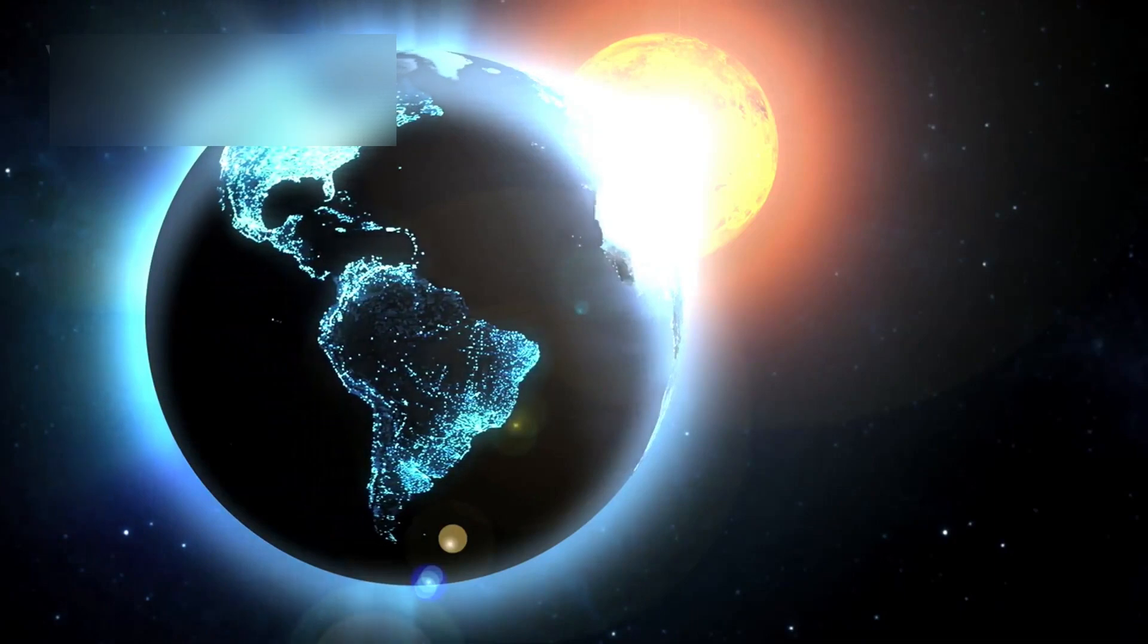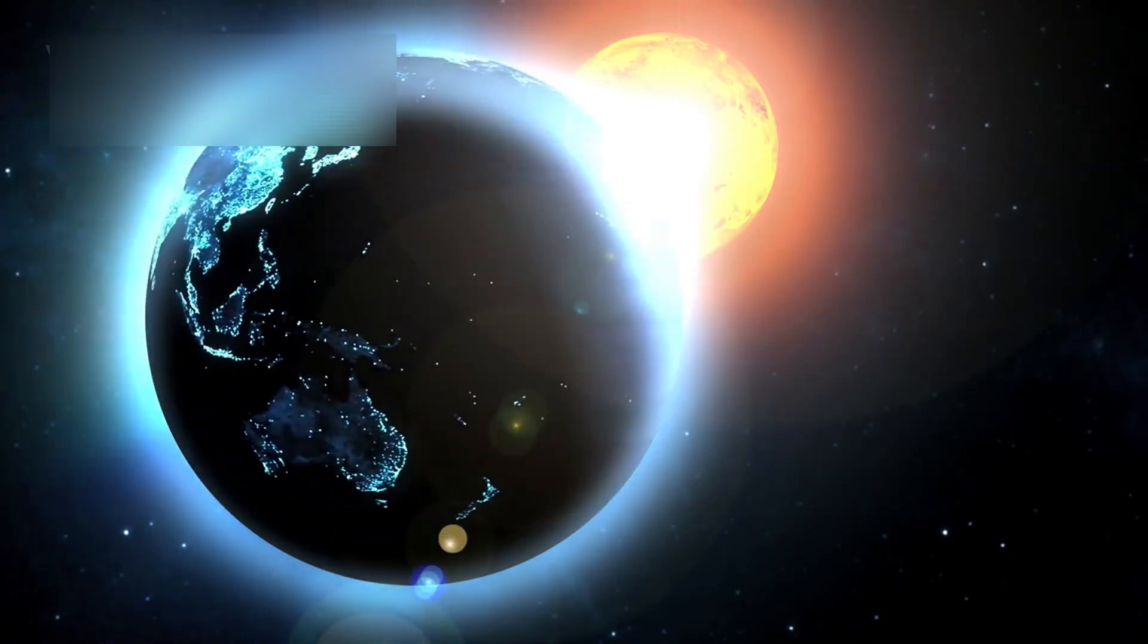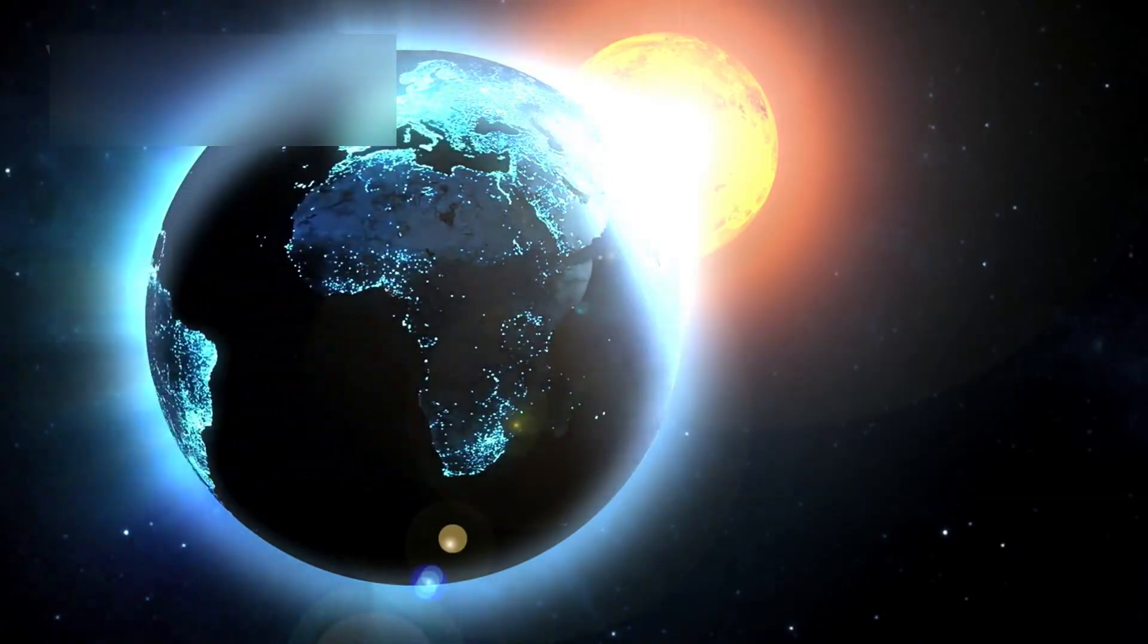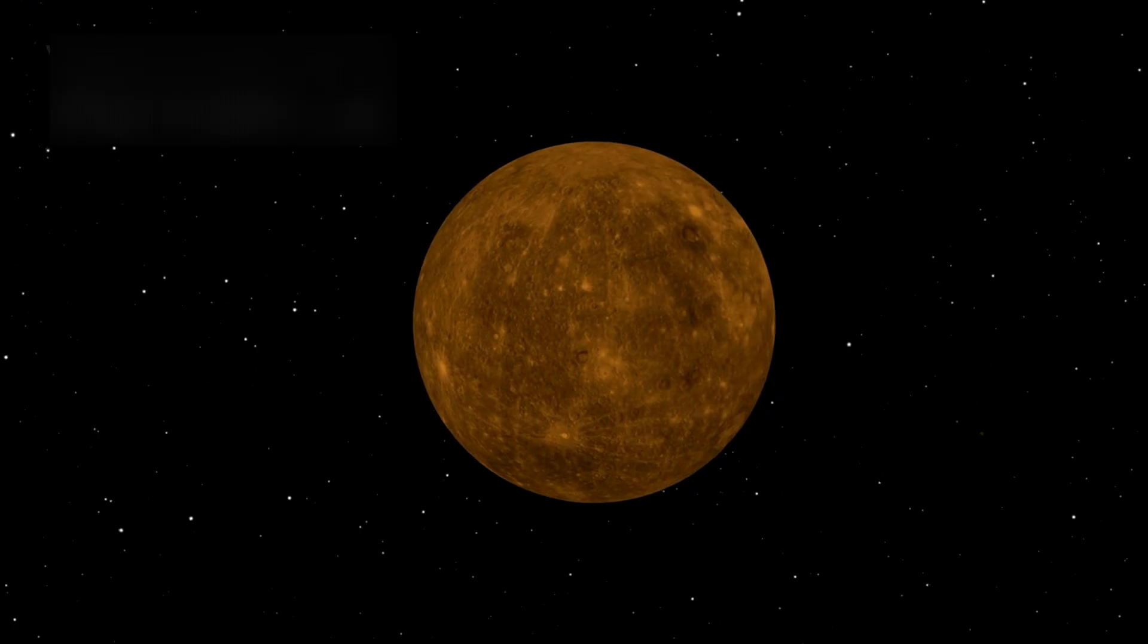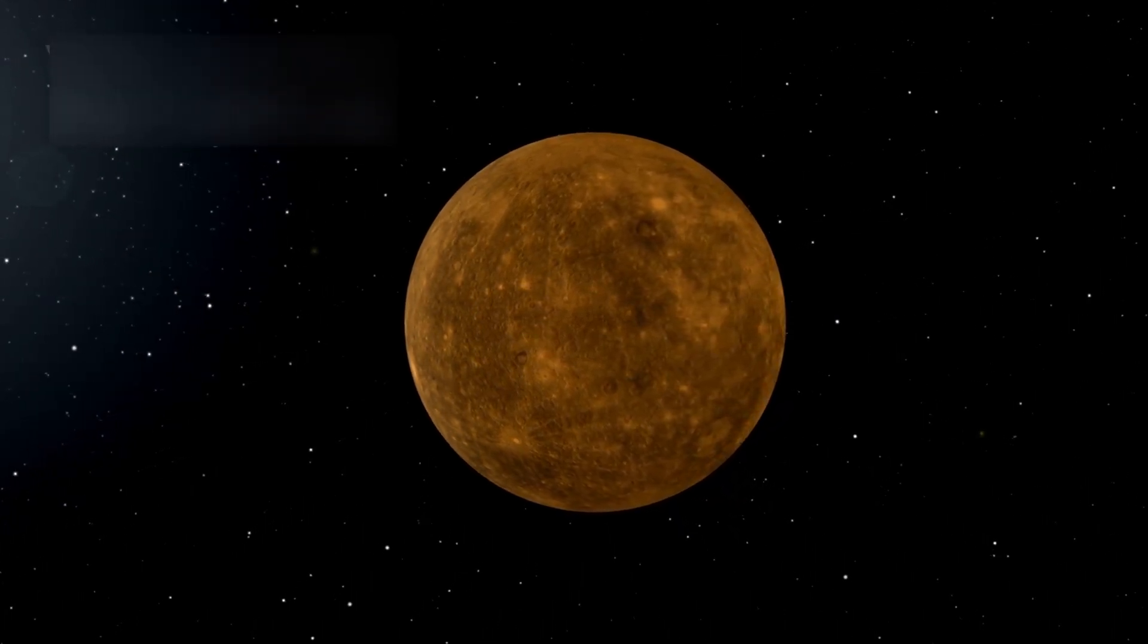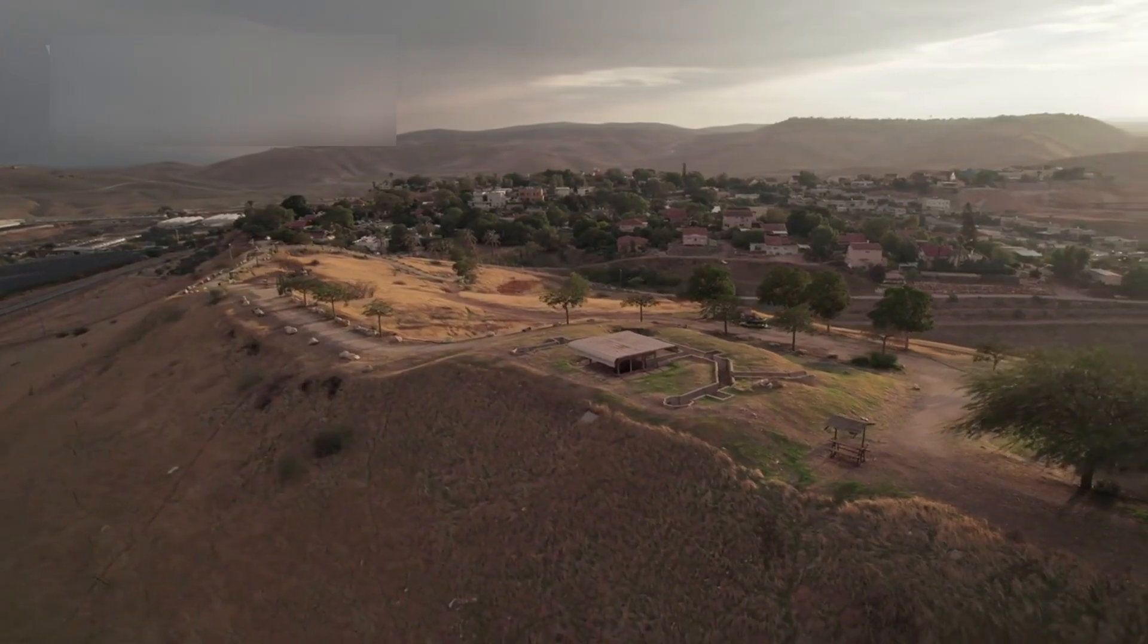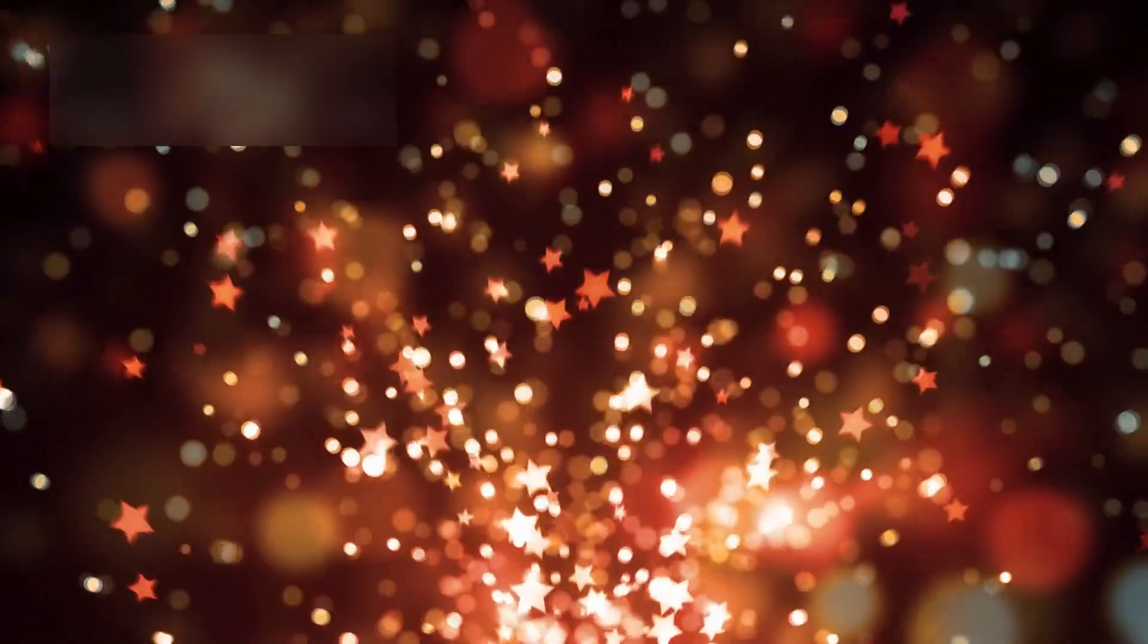The planet orbits a red dwarf star named K-218 at just 0.18 astronomical units, far closer than Earth is to the Sun. For comparison, Mercury orbits our Sun at 0.39 astronomical units. Yet K-218b isn't scorched. Red dwarfs, though sometimes active, are much cooler and dimmer than our Sun.